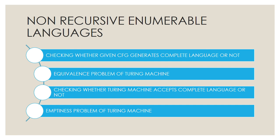That is all for the examples of recursive, non-recursive, and recursively enumerable but not recursive languages. I hope everything is crystal clear. If you have any doubts, please comment below the video. Please like, comment, and subscribe. Bye for now, thank you.